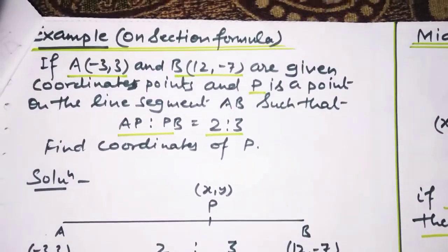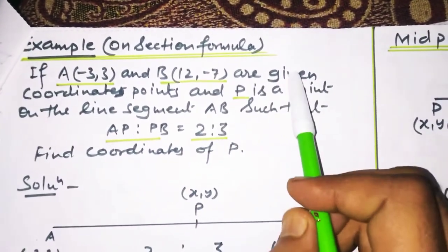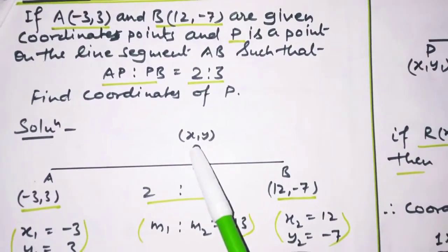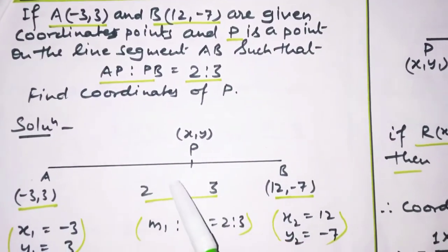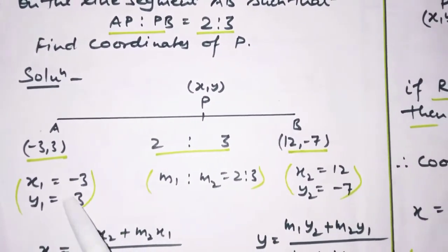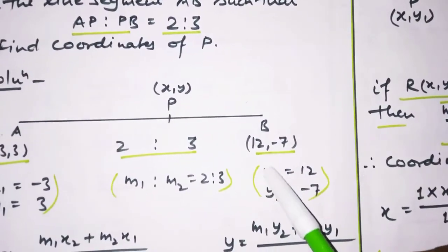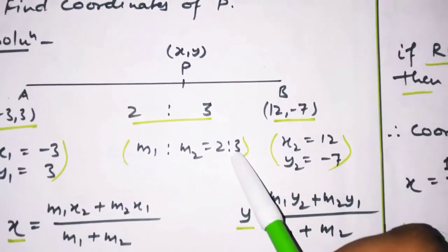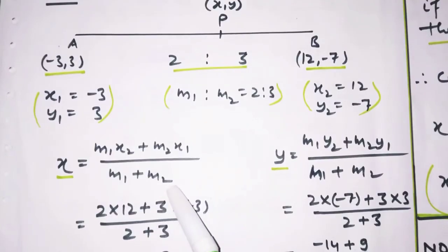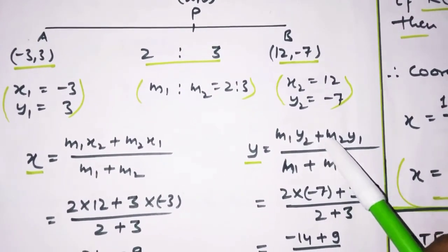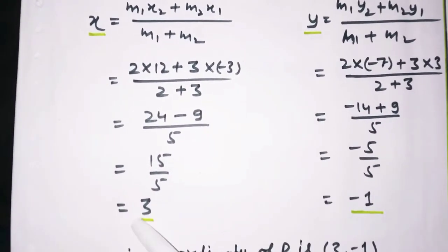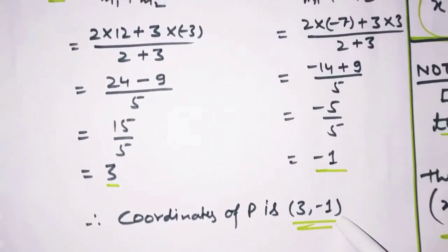Ab section formula pe ek example dekh lete hain. Yahaan A aur B ke coordinates aapko pata hain. Point P internally divide kar raha hai AB ko 2 ratio 3 mein. A ka coordinate x1, y1 likh diya, B ka coordinate x2, y2 likh diya, aur 2 ratio 3 aapka M1 ratio M2 ki value ho gaya. Section formula mein x = (M1·x2 + M2·x1)/(M1+M2), y = (M1·y2 + M2·y1)/(M1+M2). Values put karke solve karte hain — x aur y ki values milti hain. Coordinate of P is (3, −1).